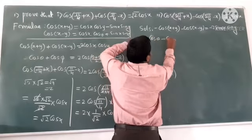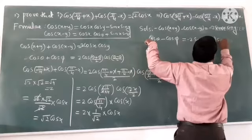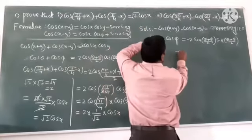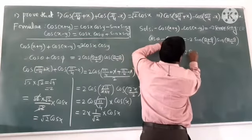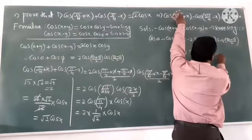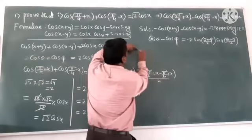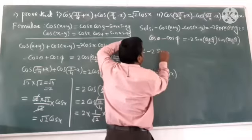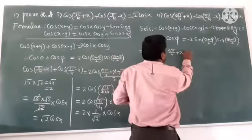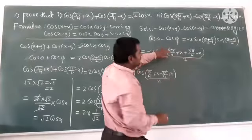cos θ - cos φ is equal to -2sin((θ+φ)/2)sin((θ-φ)/2). So apply the value directly. -2sin(3π/4 + x), this is θ, so minus, this is the value.